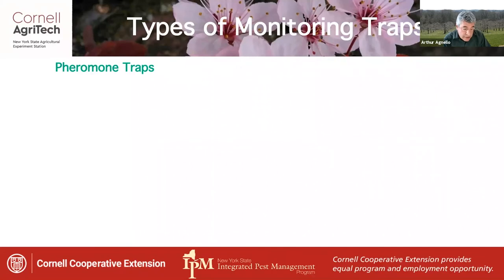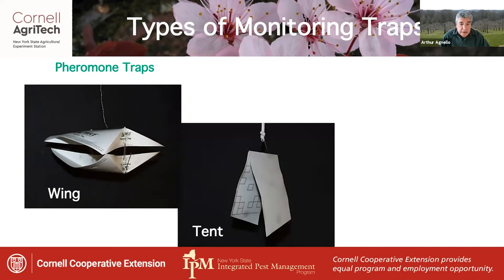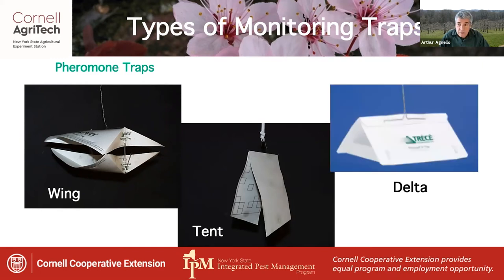Let's have a look at some of the types of monitoring traps, beginning with pheromone traps. Here is a wing trap — kind of an older style — which is used for moths. And this is a tent trap for San Jose scale adults. This is a large plastic delta trap, also used for moths, and possibly a little more practical to use than the older wing trap.